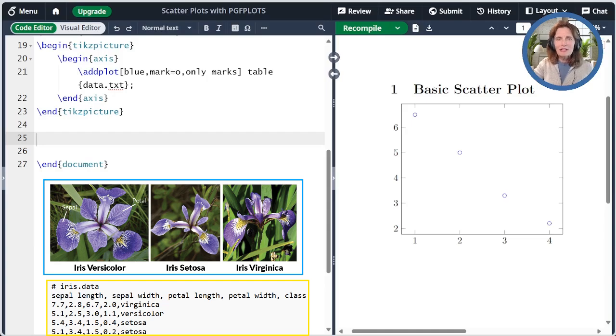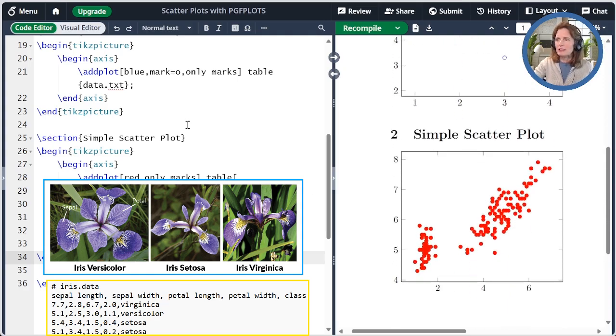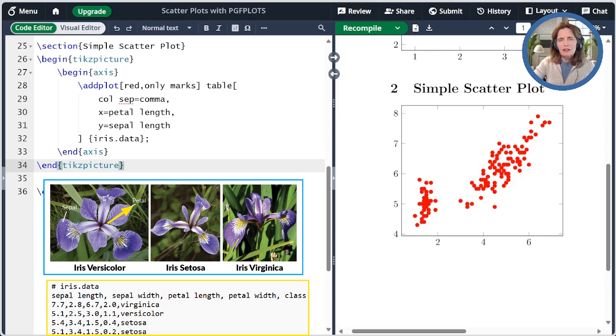Let's do another scatterplot with a title and axis labels. I'm using the iris dataset, which is well known in machine learning, and comprises measurements from 150 iris plants of three types. I'm showing a picture of the three different types below. We'll be plotting the petal length versus the sepal length, as you see here.